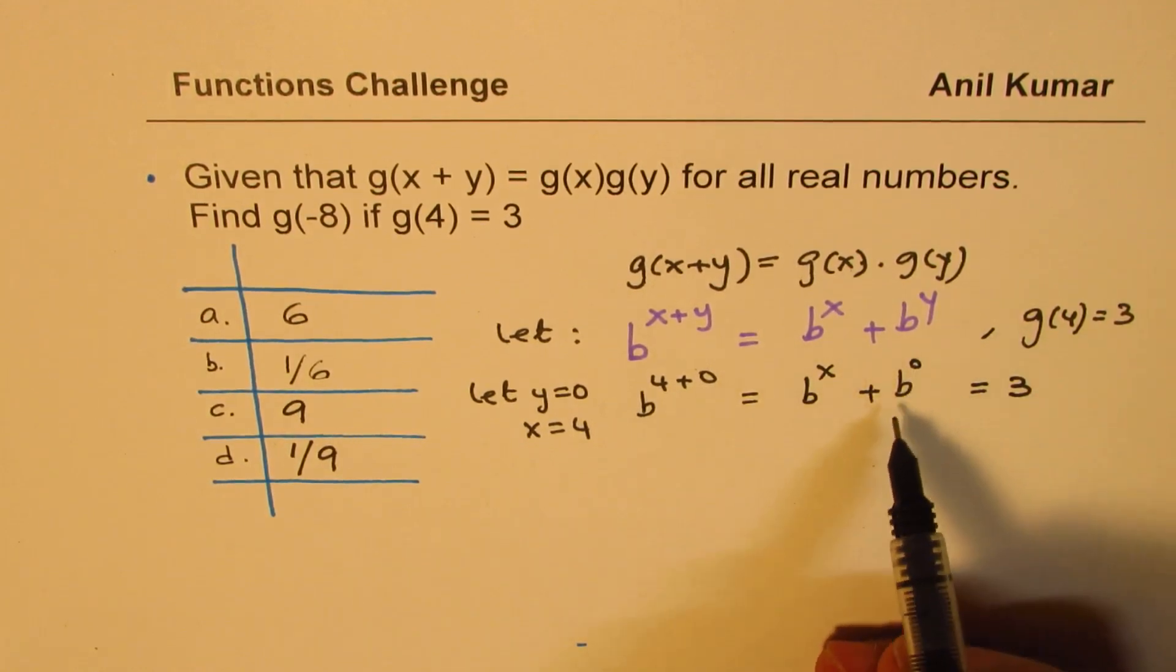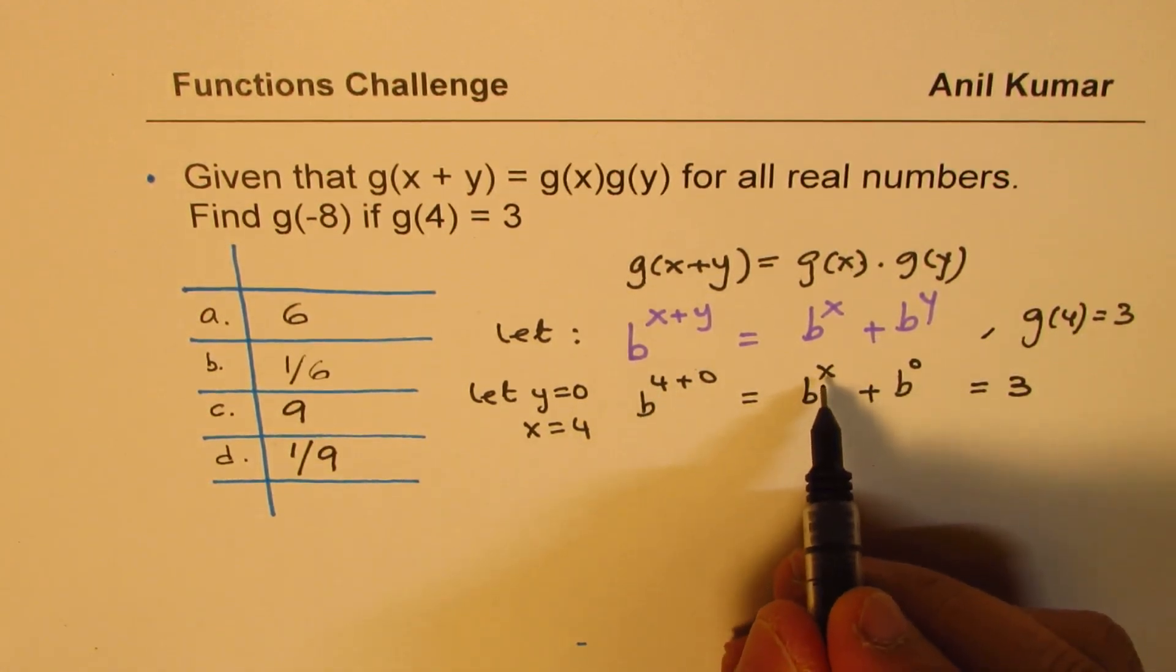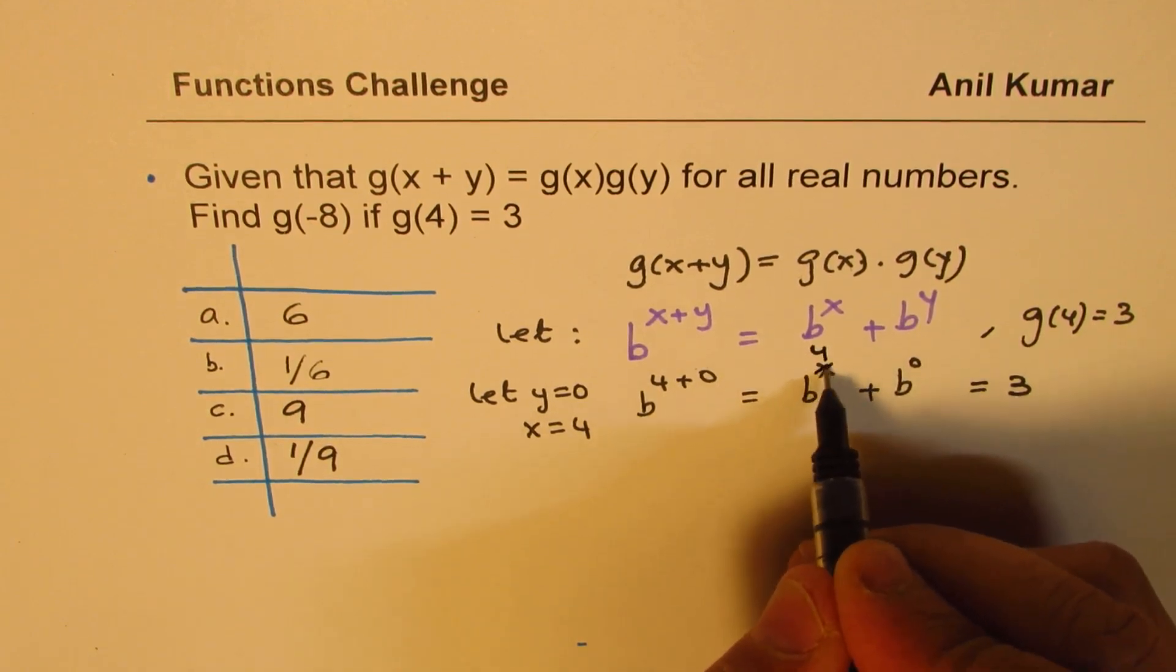Now, anything to the power of 0 is always 1, right? So that is known to us. And from here, what do we get? I mean, this is 4, right? This is 4. OK.